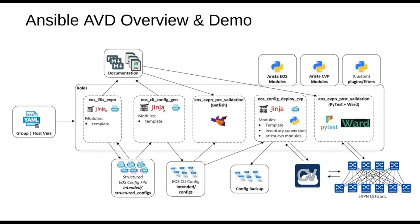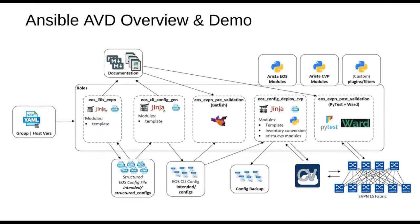The fourth role is configuration deployment via CloudVision. It takes the intended configuration and delivers it to CloudVision, and also builds the container topology in CloudVision that can be used to deliver configuration to sets of devices. Finally, you go into CloudVision to approve and deploy the configurations to the devices, and afterwards you can run post-validation testing. Now, without further ado, I'm actually going to go into the demonstration.